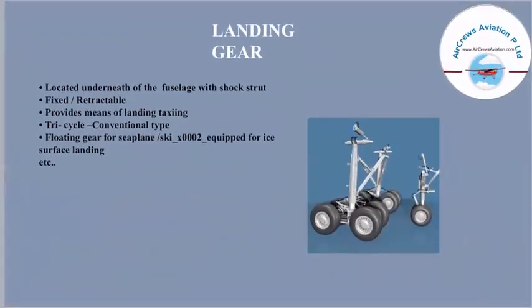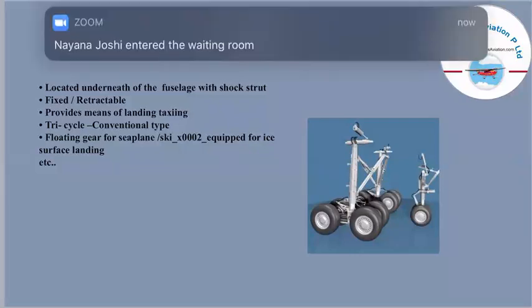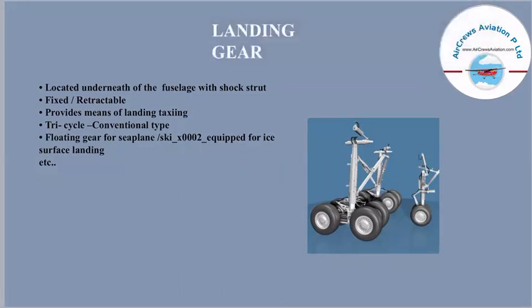Landing gear is located underneath the fuselage with a shock strut. Landing gear can be of two types: fixed and retractable. It provides the means for landing and taxiing. The tricycle configuration is the conventional type of landing gear, and there are different types depending on the operation of the aircraft.